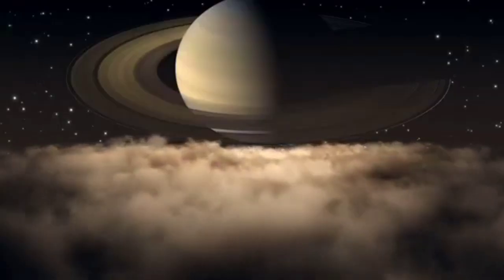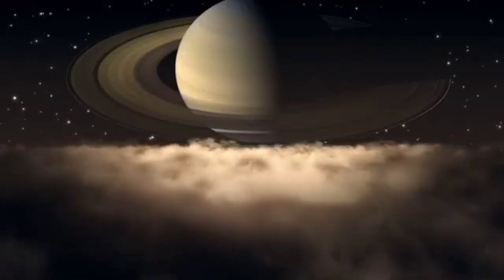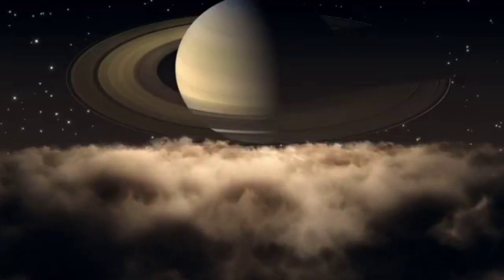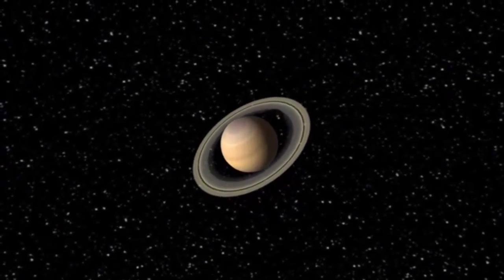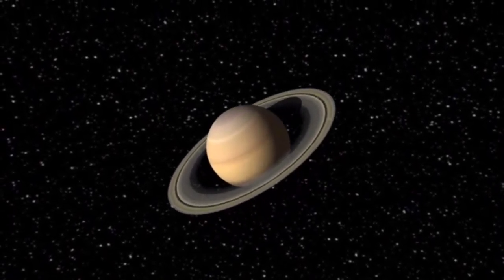The sixth planet from the sun is Saturn. Saturn is the second biggest planet in our solar system. It has big rings made up of rocks and ice. These rings are huge. They're over 150,000 miles wide.